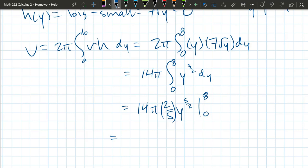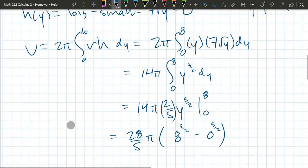I don't think this number will be nice. 14 times 2 is 28/5 π. So that's a constant. Now plugging in 8 to the 5/2 power minus 0 to the 5/2 power. Zero to almost any power is zero.